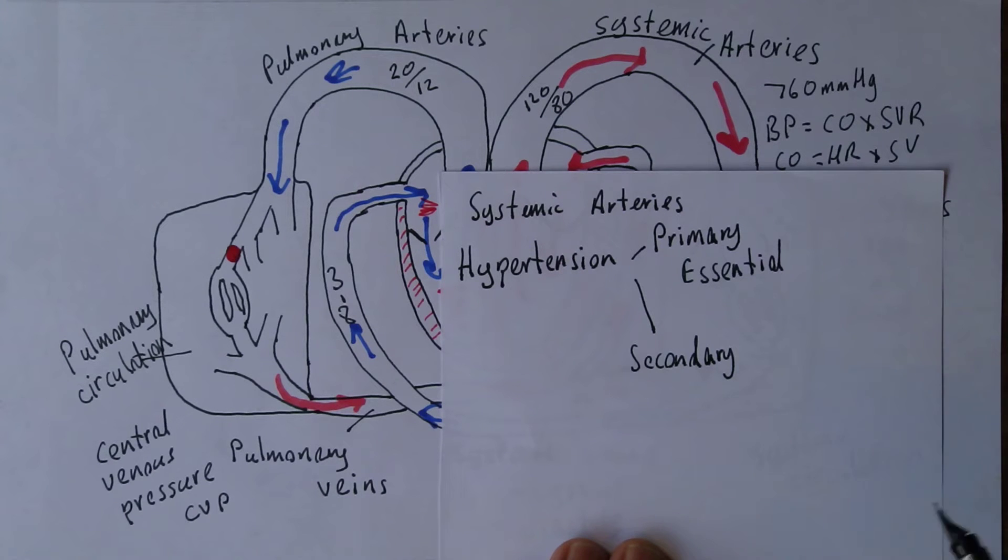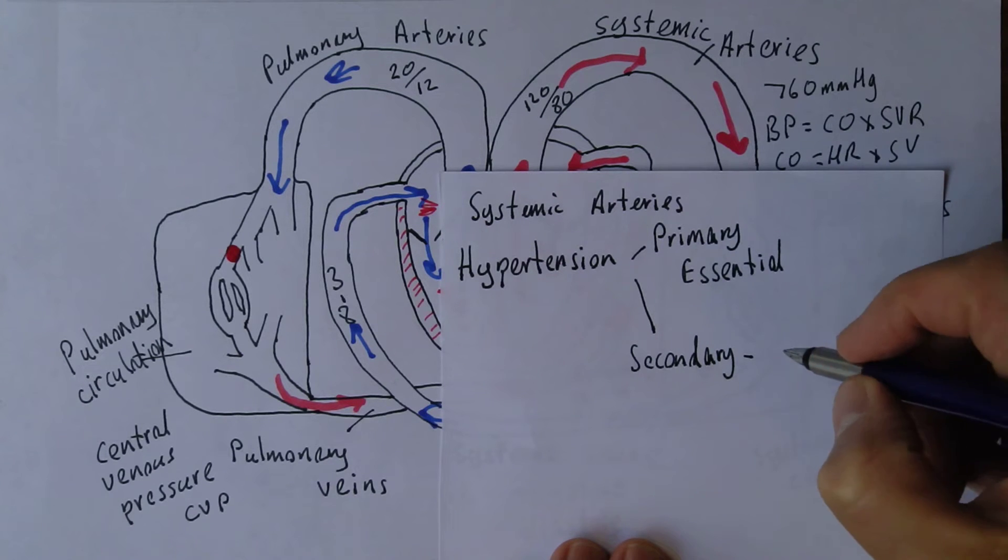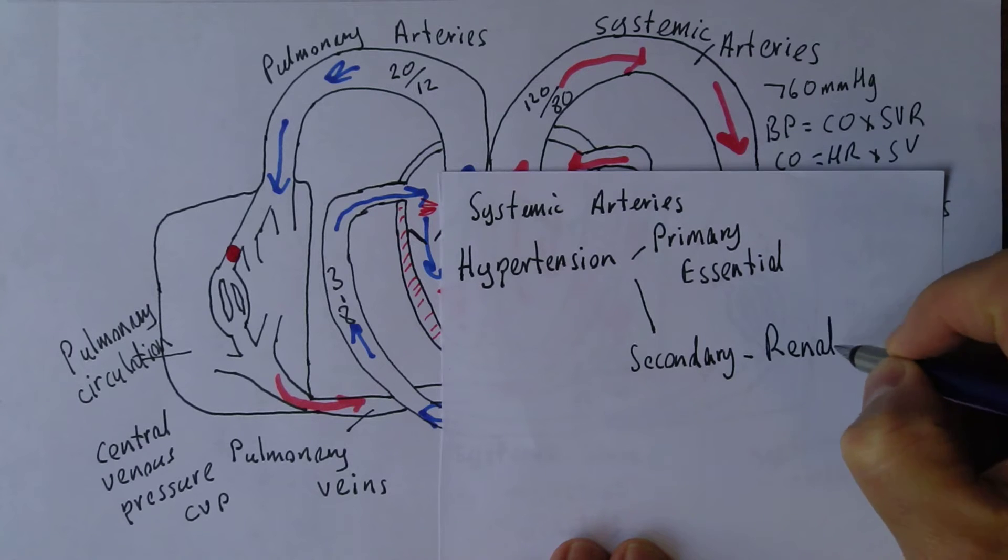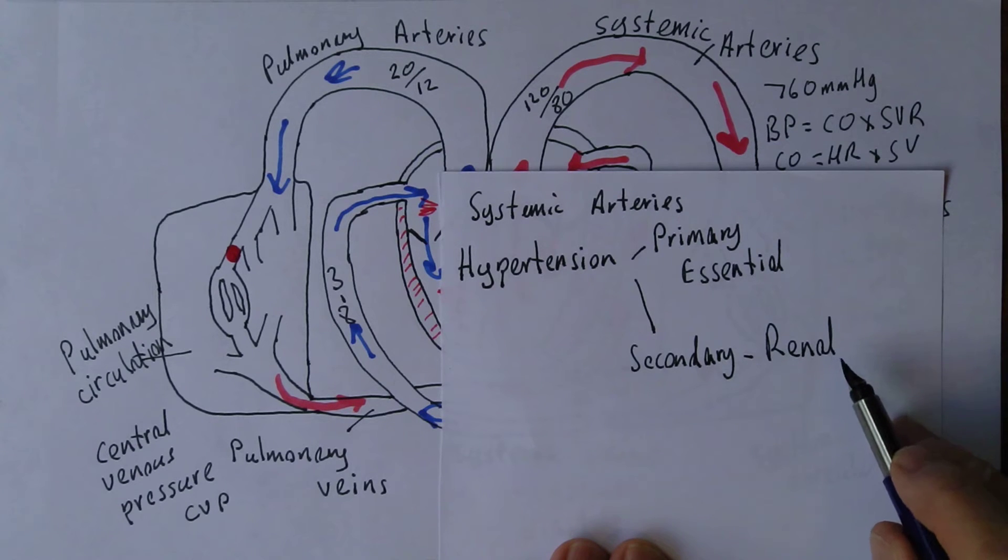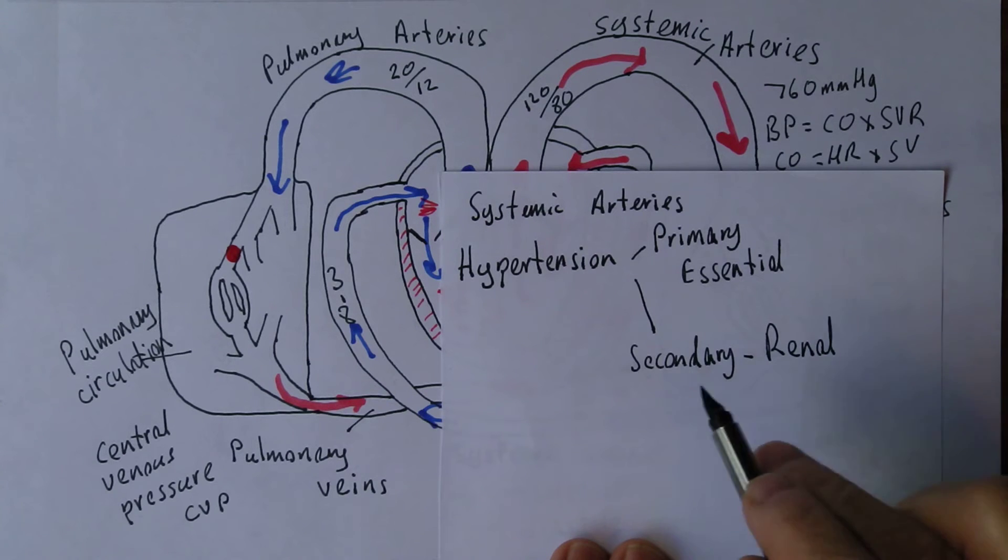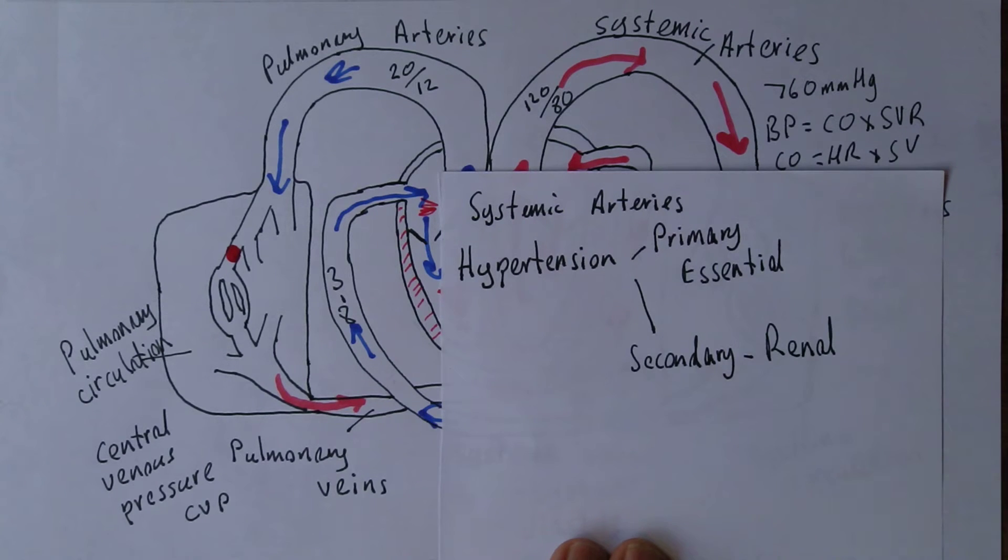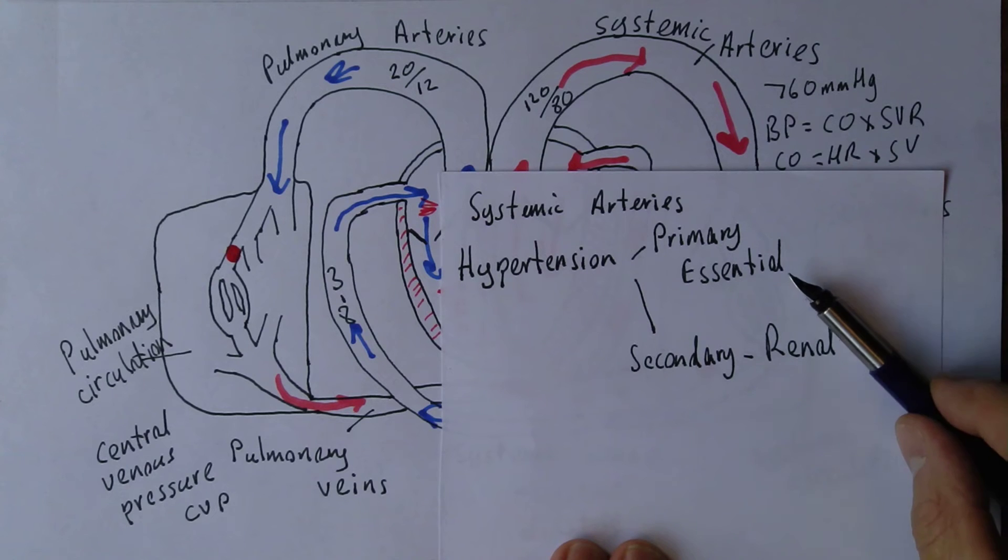For example, secondary hypertension is often caused by renal problems. The kidney is very closely involved in control of blood pressure. Problems in the kidney can give rise to hypertension. But other times you get your blood pressure checked and it's a bit high and that can maintain forever if you develop it. Primary hypertension doesn't seem to be caused by any underlying pathology. It seems to start with the blood pressure itself, so it's also called essential hypertension.